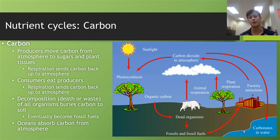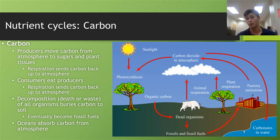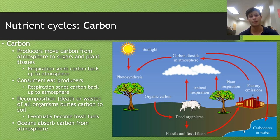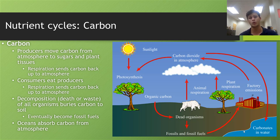For the carbon cycle, we start with CO2 in the atmosphere, which tends to be the largest accessible reservoir of carbon. Producers — autotrophs such as plants, algae, and anything that photosynthesizes — move carbon from the atmosphere into their plant tissues through photosynthesis, converting sunlight and CO2 into sugars incorporated into plant tissues. A mini cycle occurs where some of that carbon is re-released back into the atmosphere because the plant metabolically processes it, but most of the carbon is stored and integrated into plant tissues.